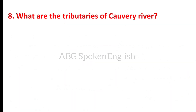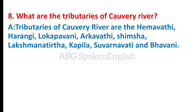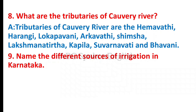What are the tributaries of Kaveri river? The tributaries of Kaveri river are Hemavati, Harangi, Lokapavani, Arkavati, Shimsha, Lakshmana Tirtha, Kapila, Suvarnavati, and Bhavani. Name the different sources of irrigation in Karnataka.